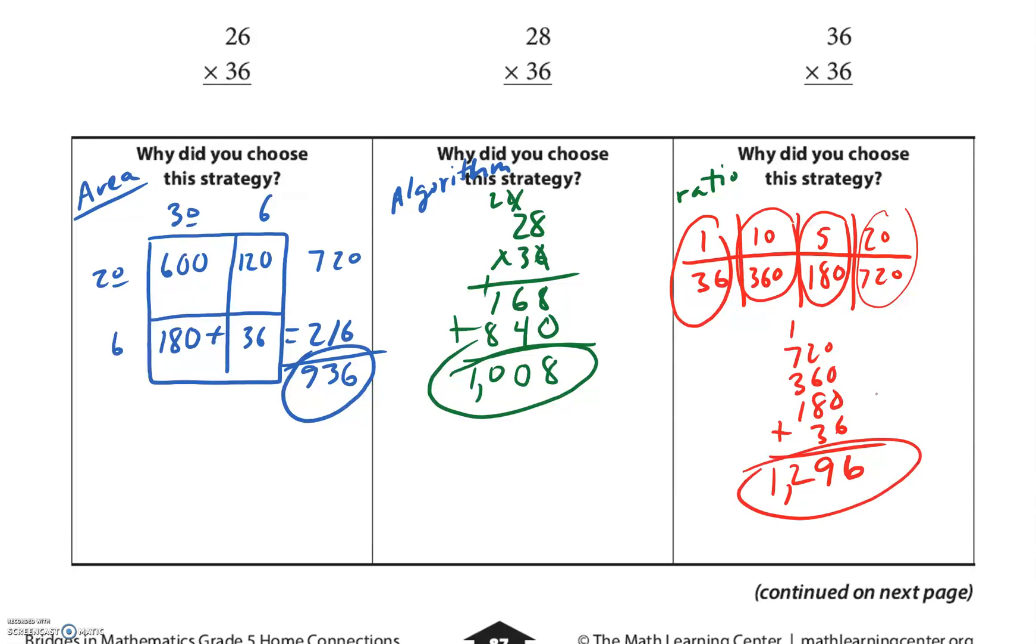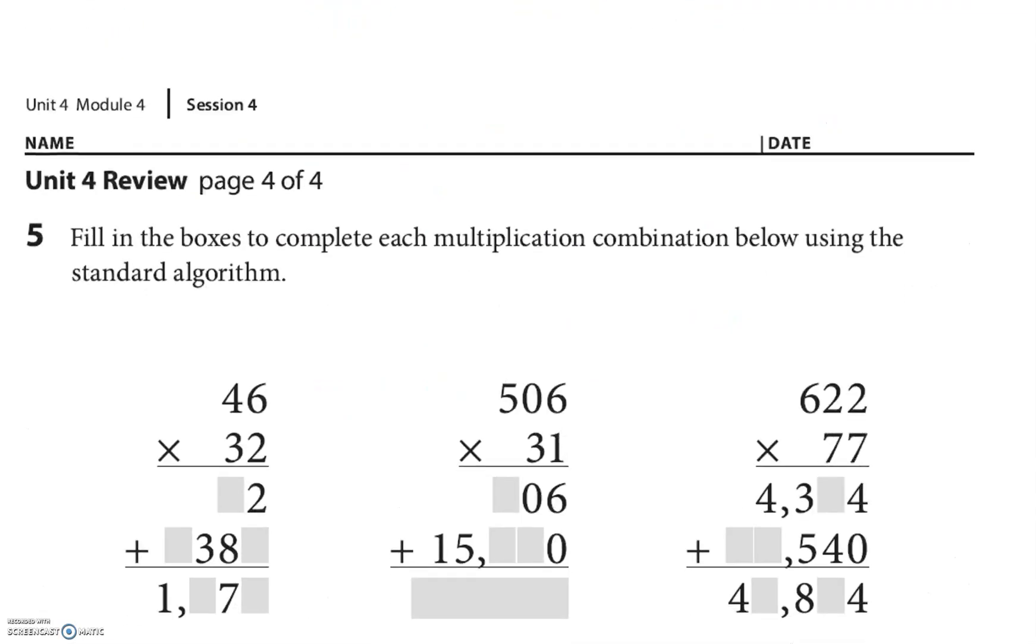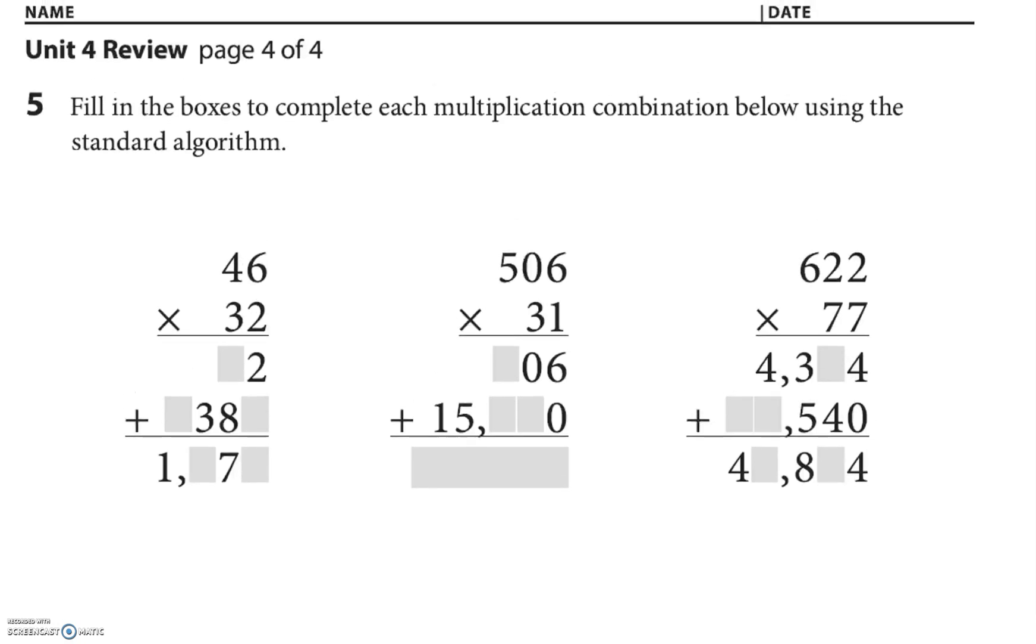All right, let's do the last page. There's just some algorithms here. My hint for you is just to do it. This first one they have the whole problem, so let's just try to work through it. I'm gonna write over it. I'm gonna start in this bottom right. So 6 times 2 is 12, there's my 2, carry my 1. 4 times 2 is 8 plus that 1 is 9.